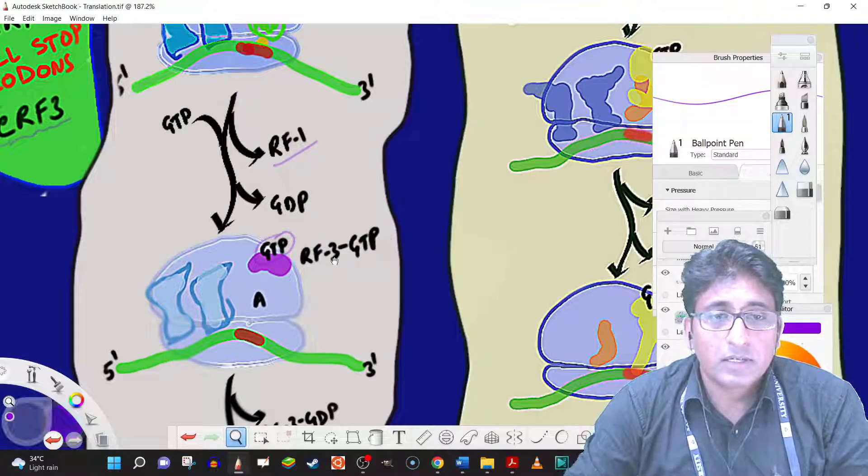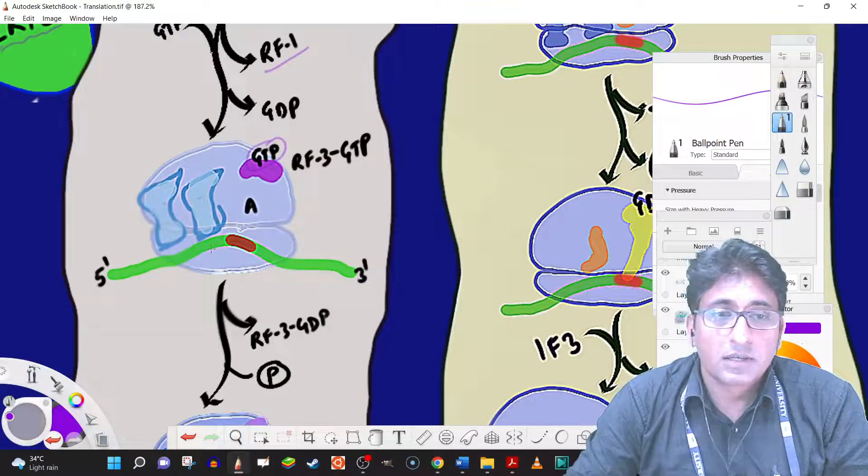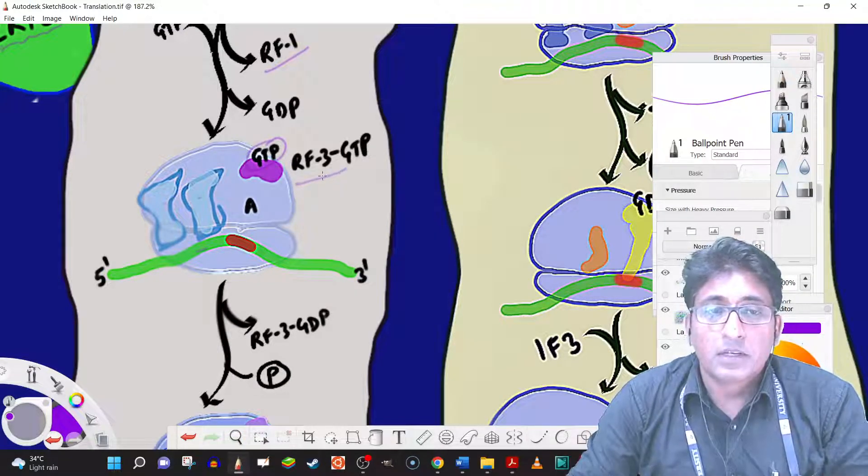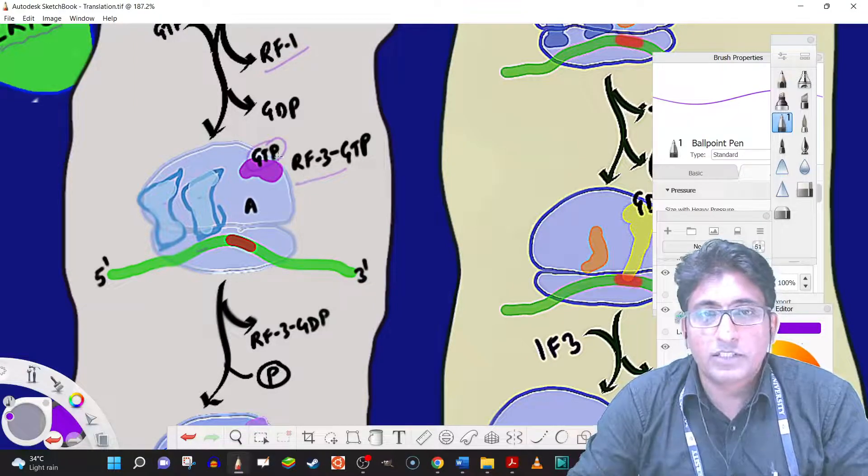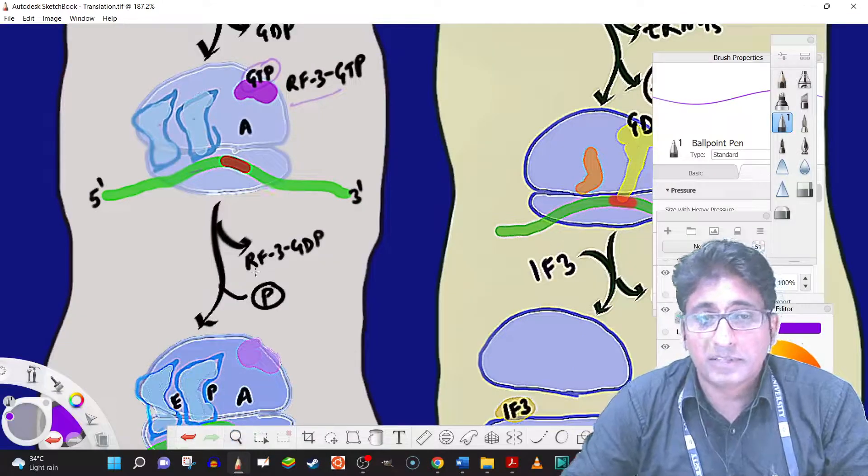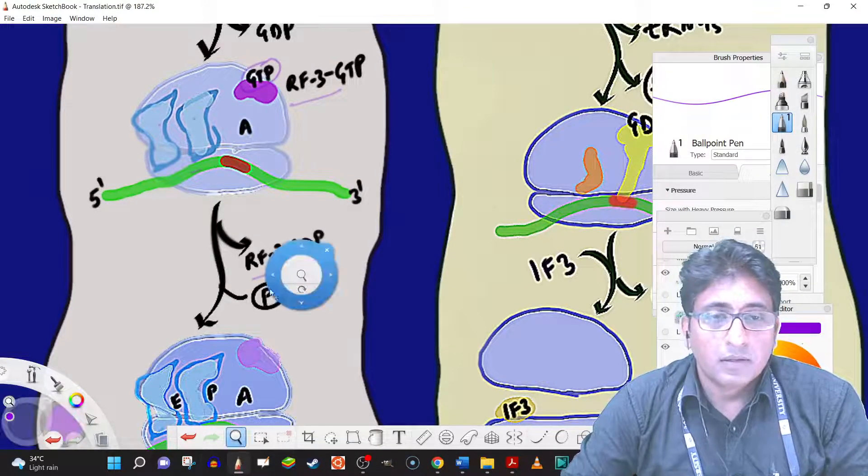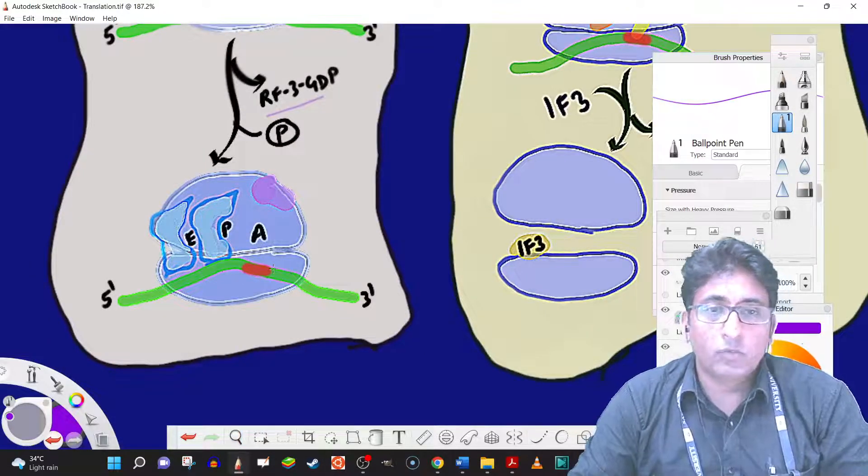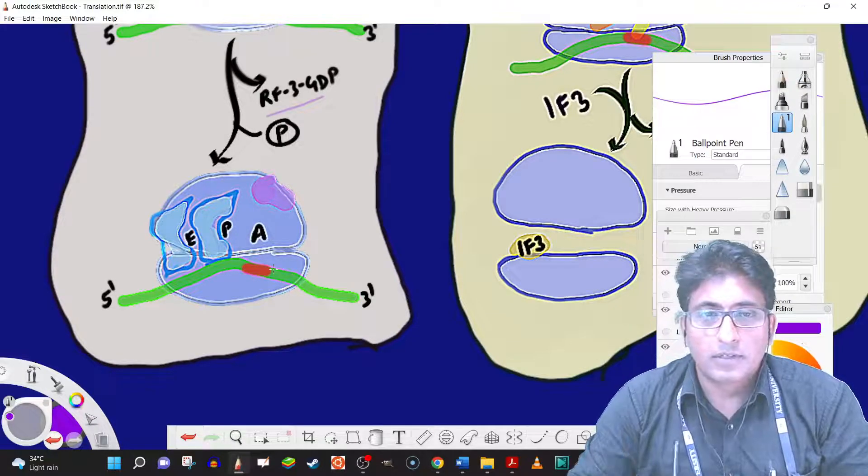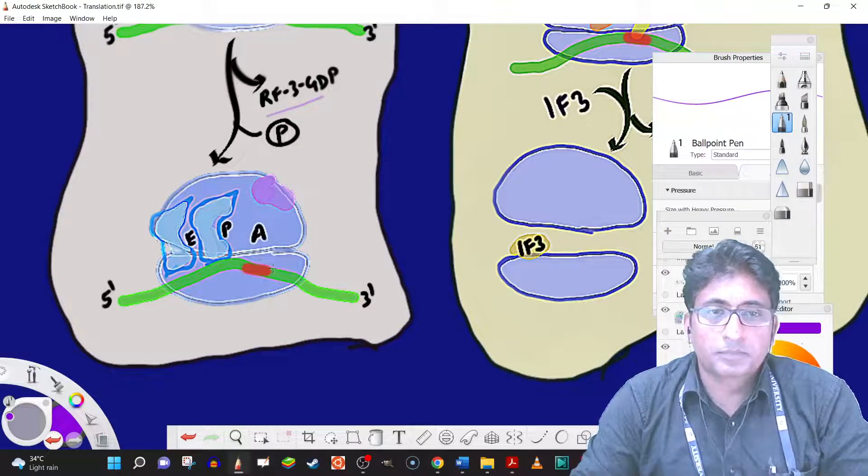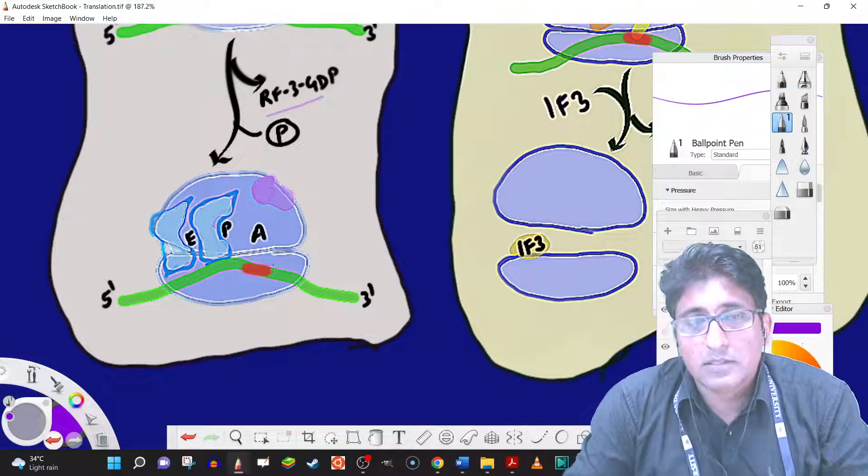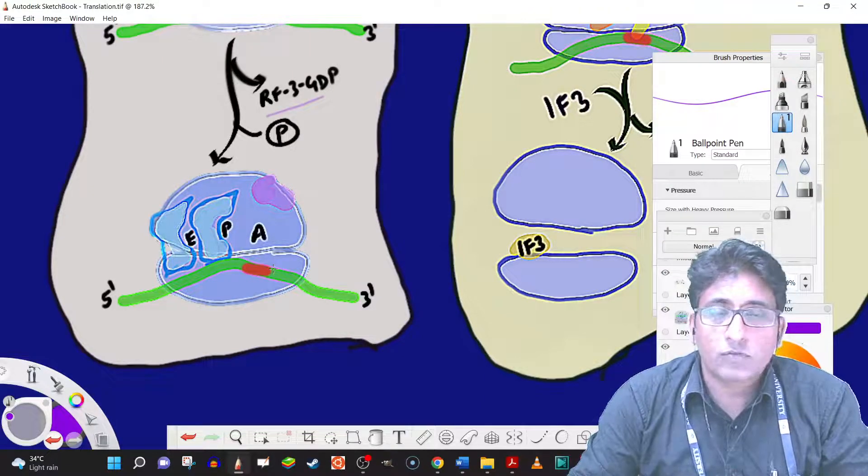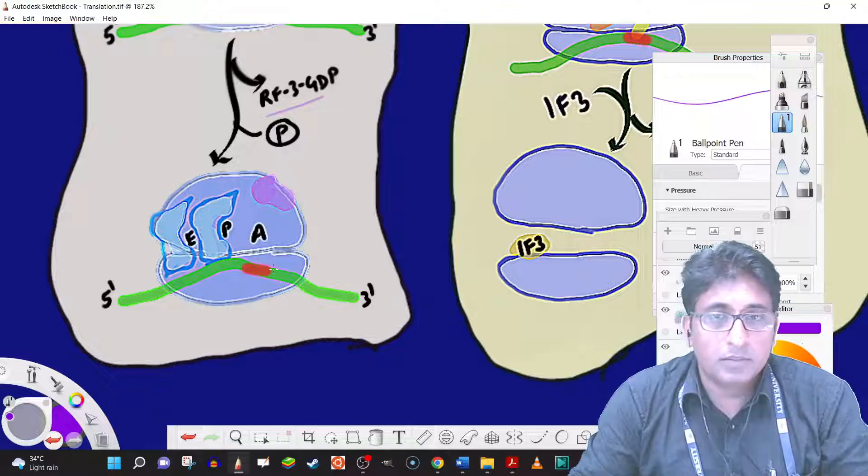So what we now have is a ribosome with two tRNAs and the mRNA and the RF3 bound GTP. The bound GTP is hydrolyzed to GDP. And that will trigger the release of RF3. Now we have only the ribosome, ribosome mRNA with the two tRNAs. So we still didn't achieve the release of the ribosomal subunits and the mRNA. So class 1 release factors are involved in the release of peptide by recognizing the stop codon.